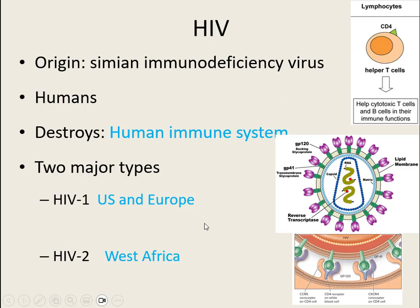There are two major strains of this virus — they do the same thing but are more predominant in different parts of the world. HIV-1 is usually found in the US and Europe; HIV-2 is found more in West Africa. Looking at HIV's structure is important for understanding how it targets specific immune cells. It has two strands of positive-sense single-stranded RNA.